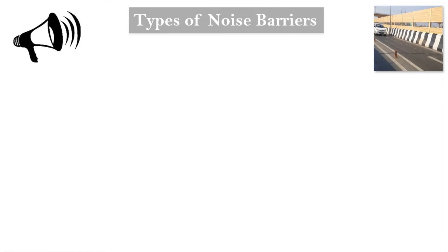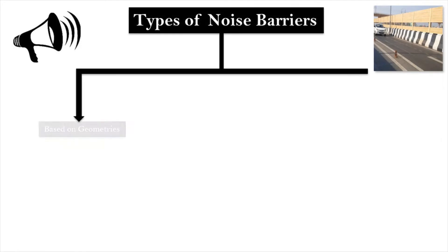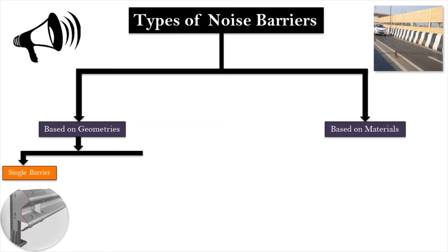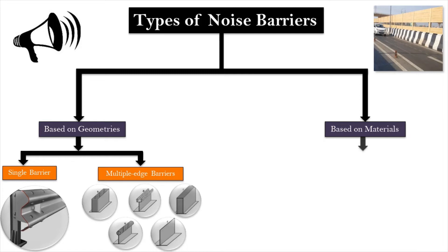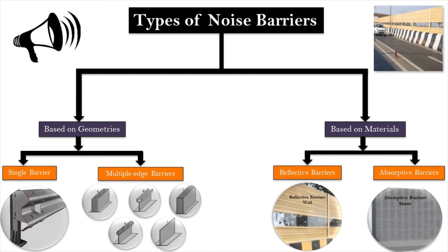Noise barriers are classified based on geometries and materials. There are mainly two types of noise barriers based on geometries: single and multiple edge barriers. Based on materials, they are classified as reflective and absorptive barriers.